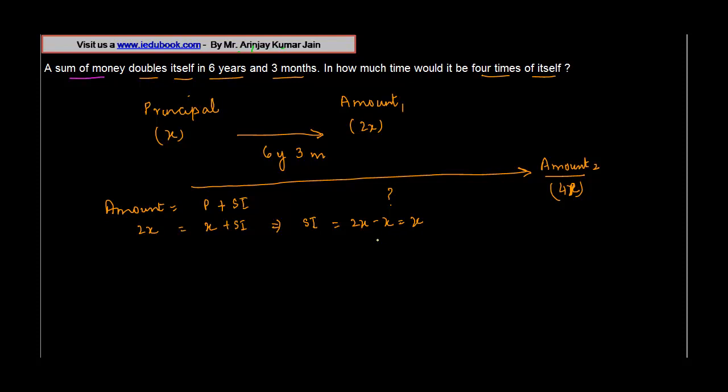We don't know what is the rate of interest, and to find out the second amount we need to know the rate of interest. Rate of interest can be written as simple interest times 100 upon principle into time. Simple interest is how much? We've calculated this as x times 100 divided by principle which is x into time.